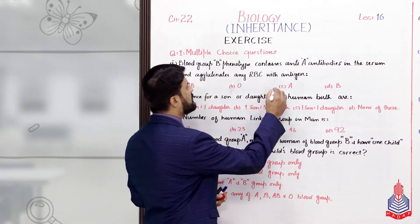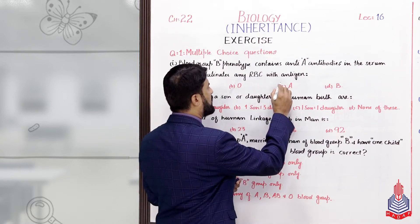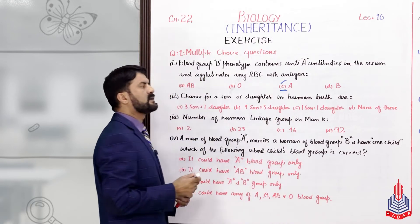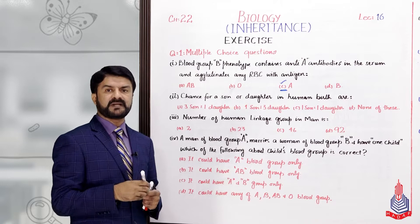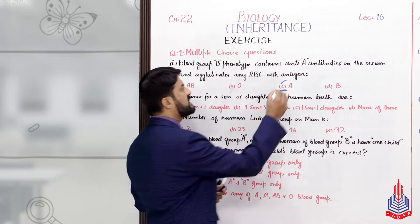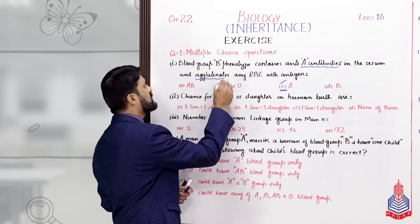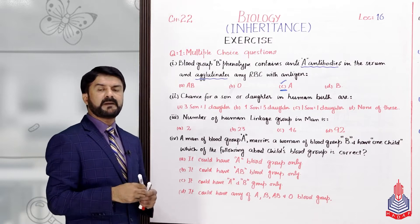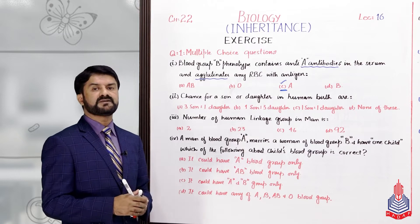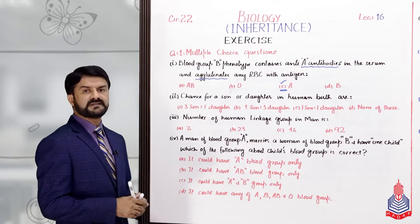So anti-A antibody will always agglutinate with antigen A. That is why no person with blood group B should be given blood group A, because if we give them blood group A, these antibodies will fight against that particular antigen A, causing agglutination in blood vessels and capillaries, leading to clotting and eventually death. So the answer is option C.